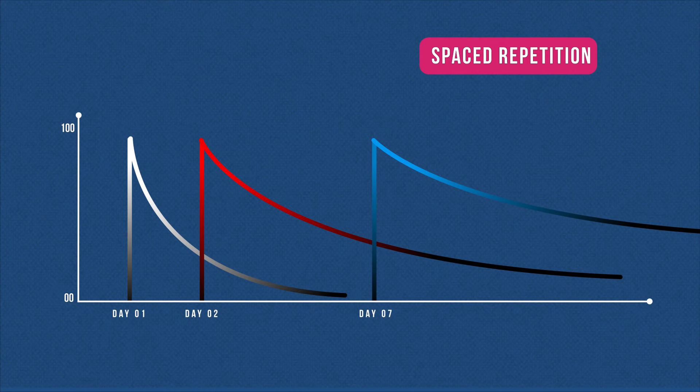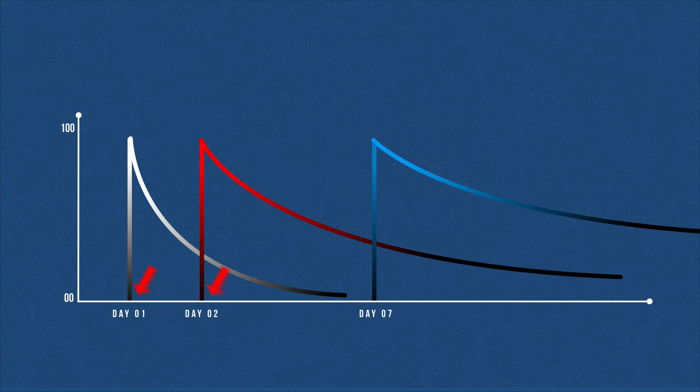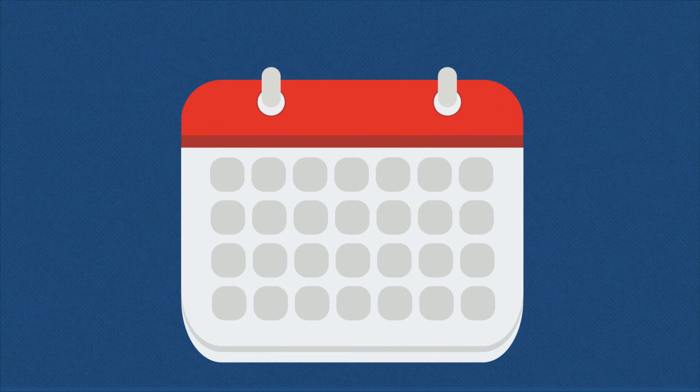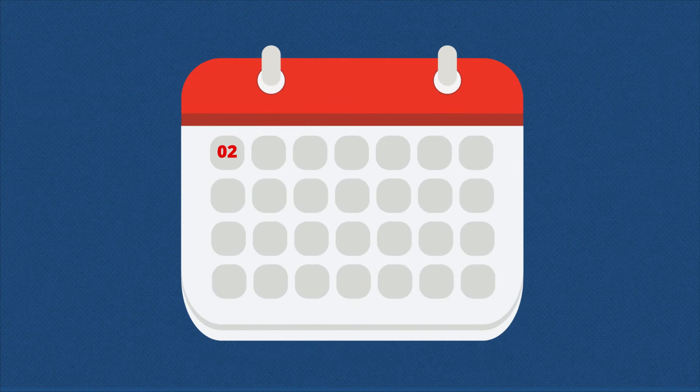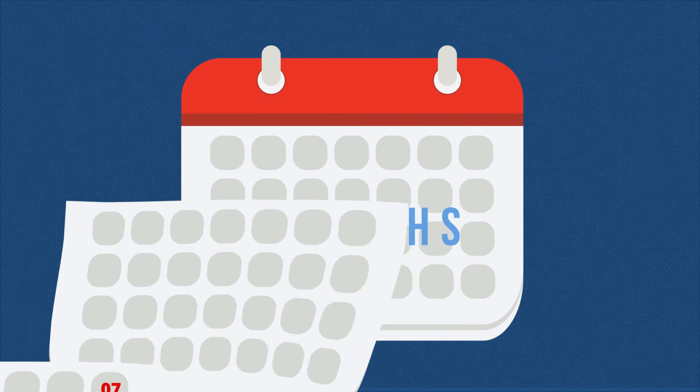It helps to retain facts in memory for longer time periods. You can do this manually by reviewing the notes in a planned timetable. For example, you can review the notes on the second day, on the seventh day, 14th day, 28th day, and then once every three months.